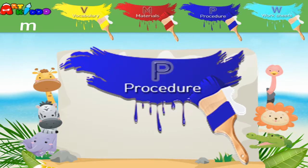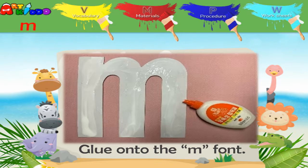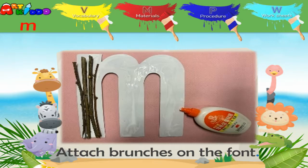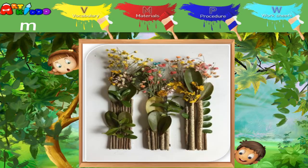Let's look at the procedure. Get a font and a glue. Attach branches on the font. Decorate dry flowers on the M. You have a beautiful M.